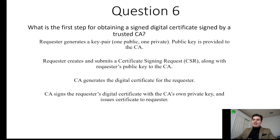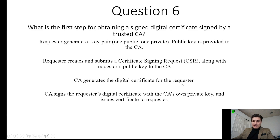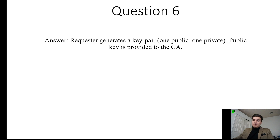Question number six: what is the first step for obtaining a signed digital certificate from a trusted certificate authority? The first thing you would do is generate a key pair and then provide the public key to the certificate authority. For example, when setting up Amazon cloud, you create your public and private key, store the private key on your computer, and provide Amazon the public key. Amazon wouldn't hold your private key, so if you lost it, you could not retrieve it. The certificate authority then generates the digital certificate, signs it with their private key, and issues it to the requester.